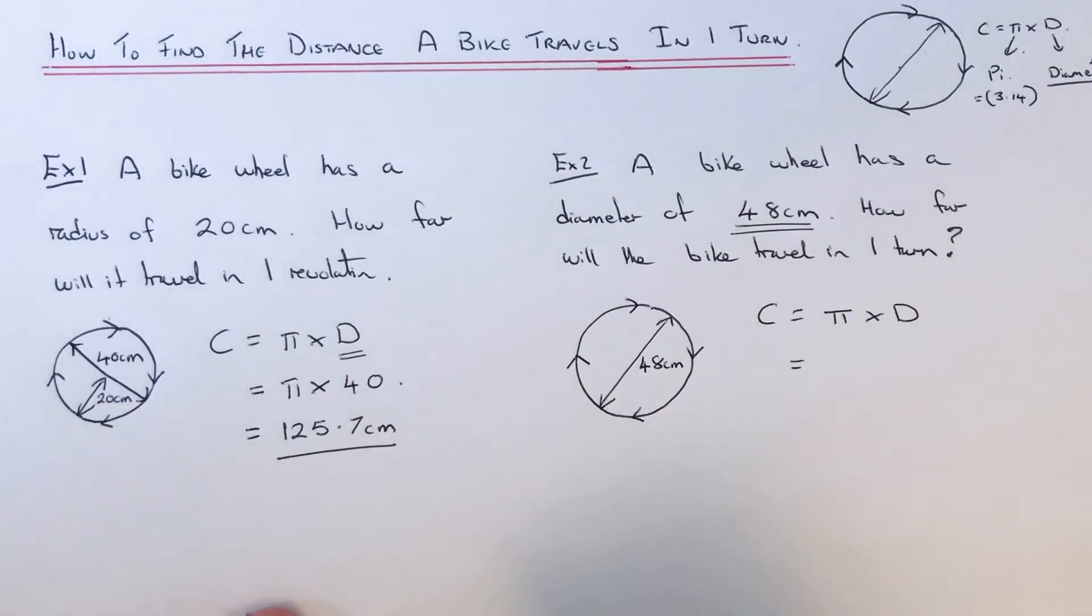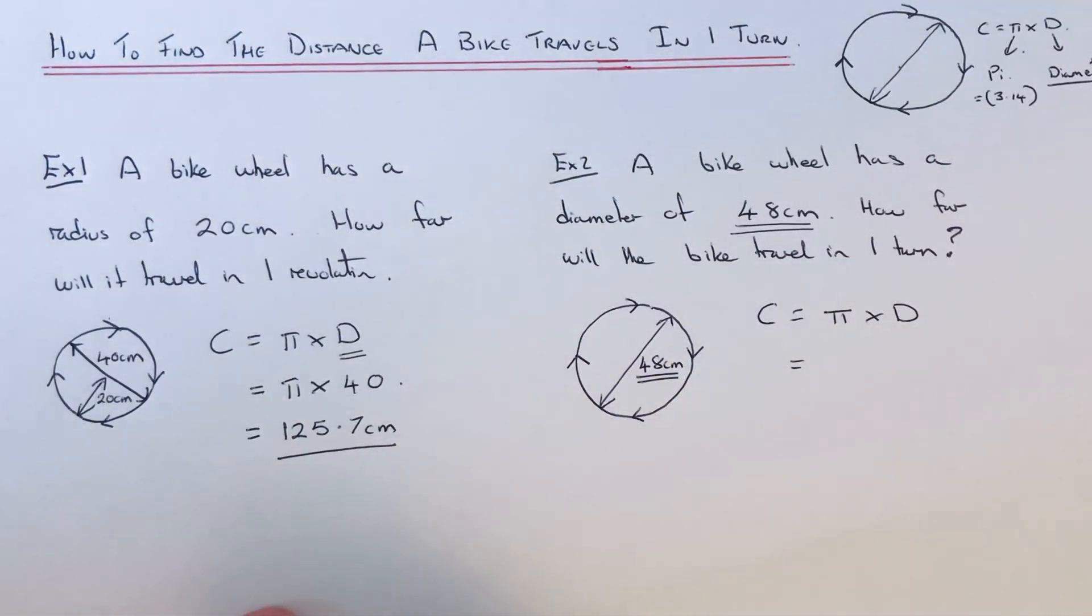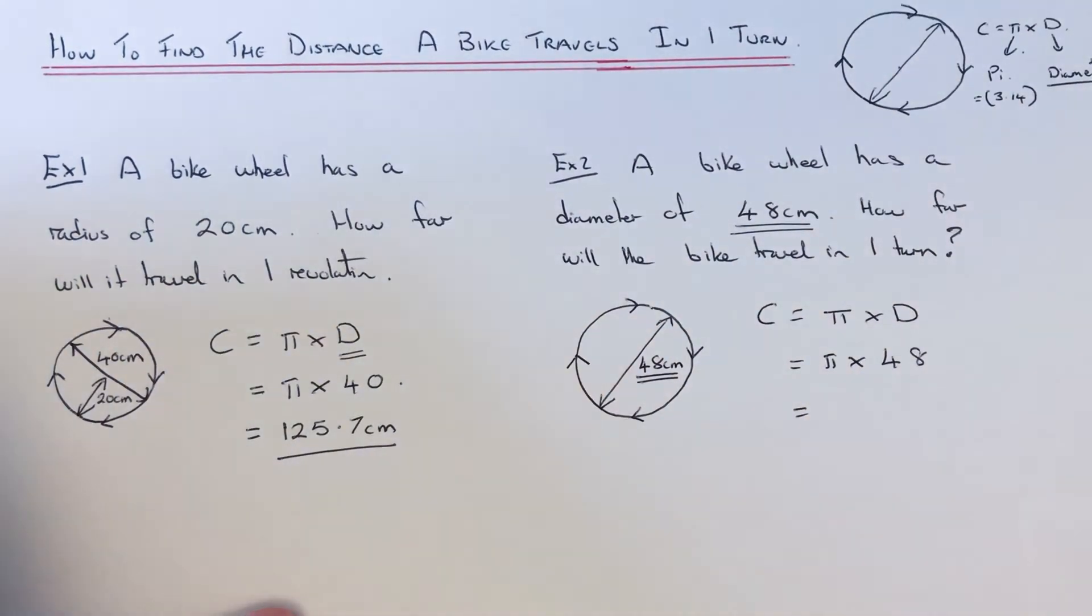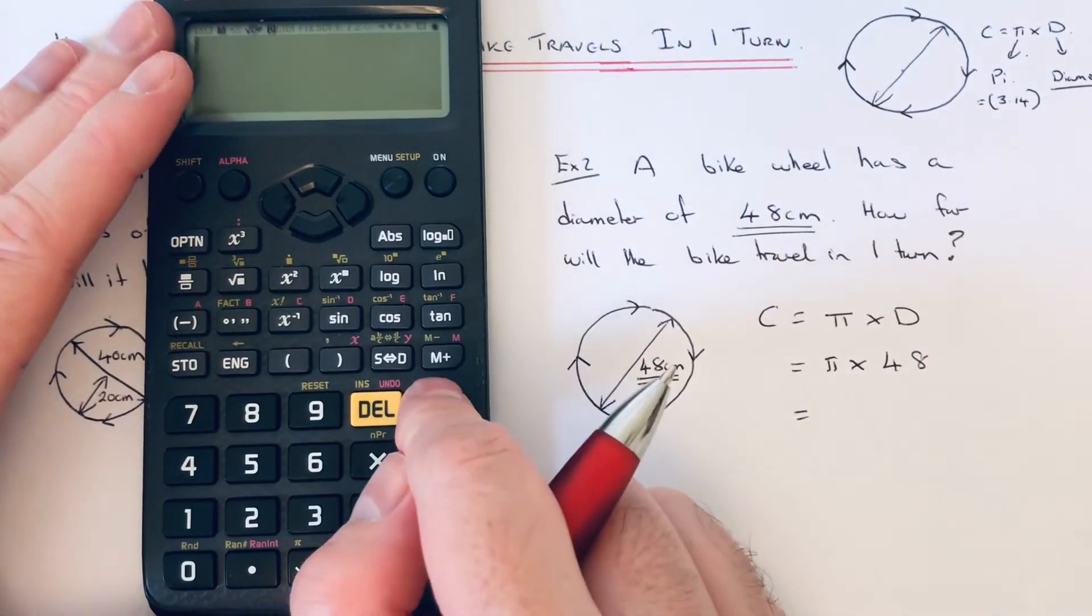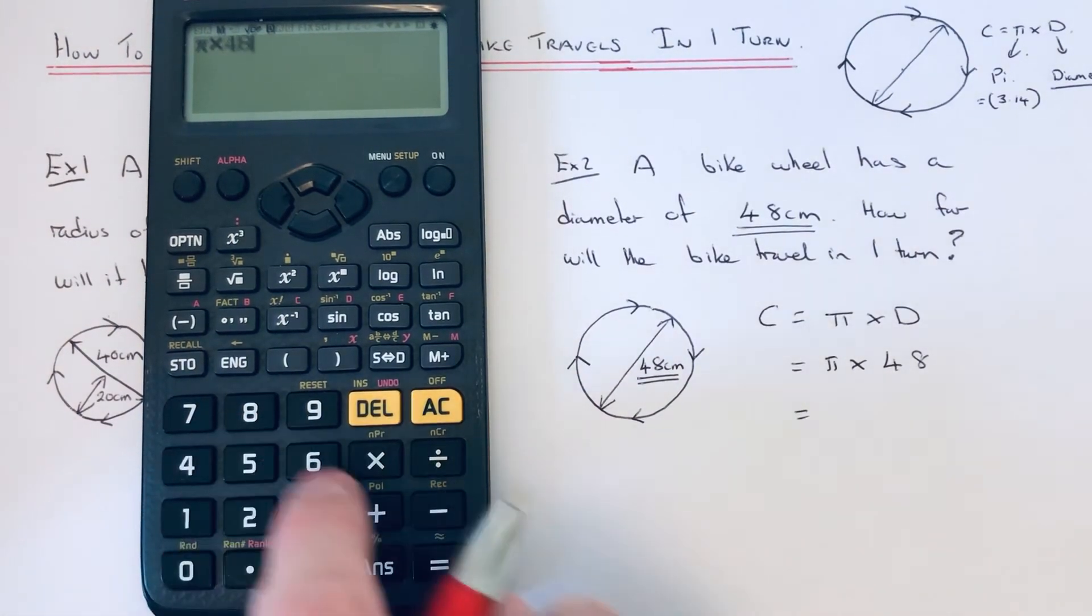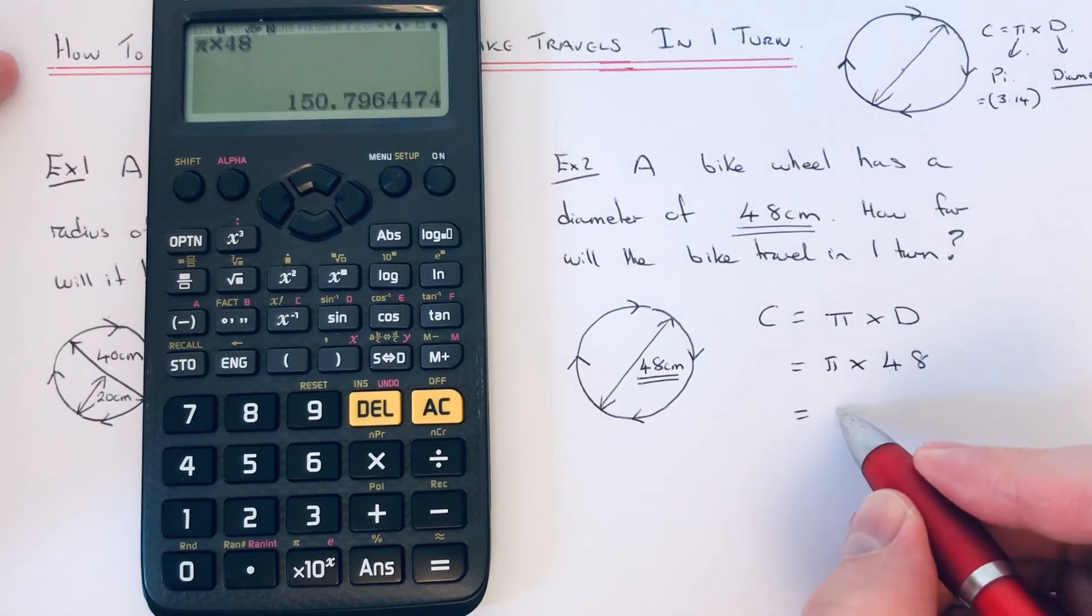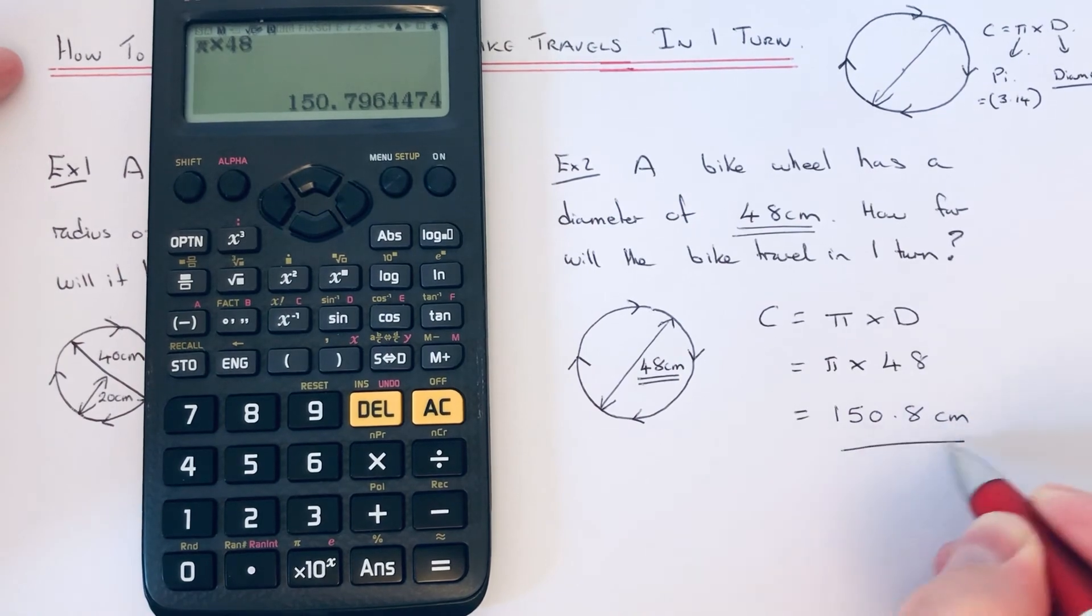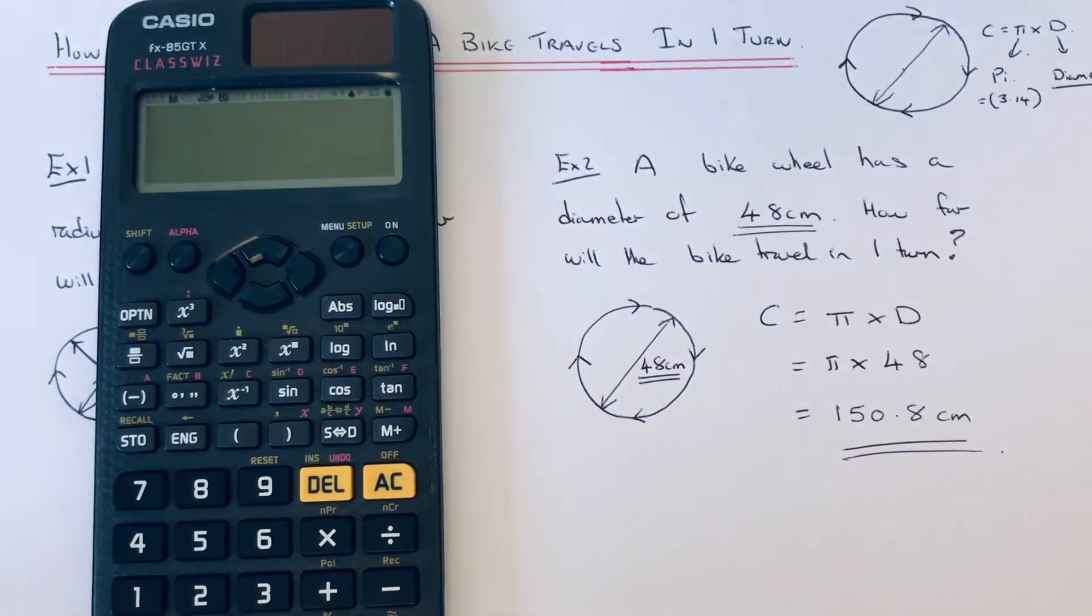We just need to put our diameter into the formula. Our diameter is already given as 48, so it's pi times 48. It's a little bit easier than the last one. Shift pi times 48. If you round it to 1 decimal place, the answer is 150.8 centimeters. That is the distance the bike